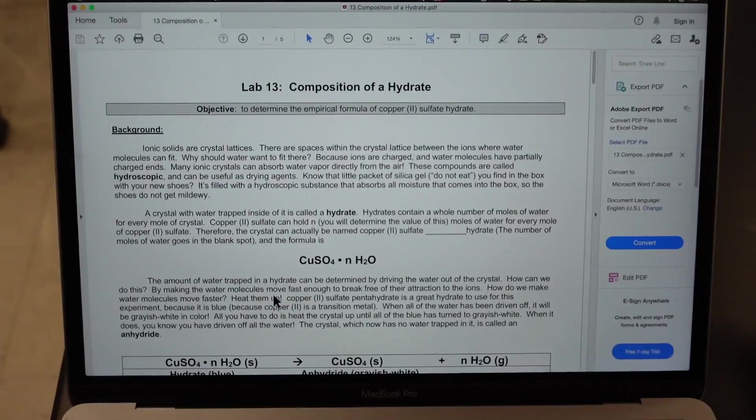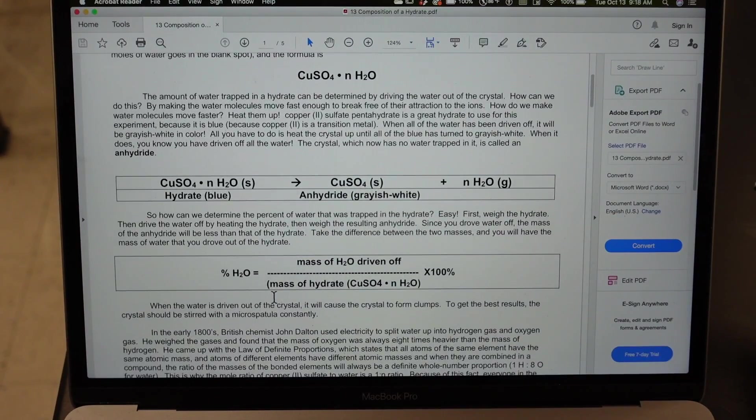So it's a very simple process. We're going to take our hydrate, copper sulfate with n number of moles, this could be any whole number here, of hydrate. We're going to add heat and it will turn from blue to grayish white, kind of an ash gray color. The water will have been driven out.